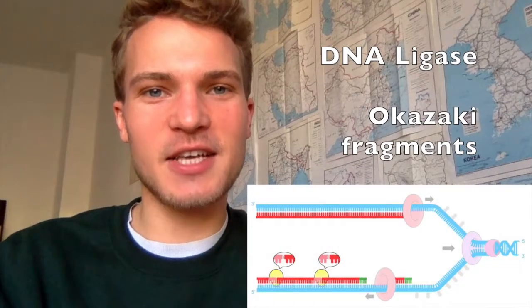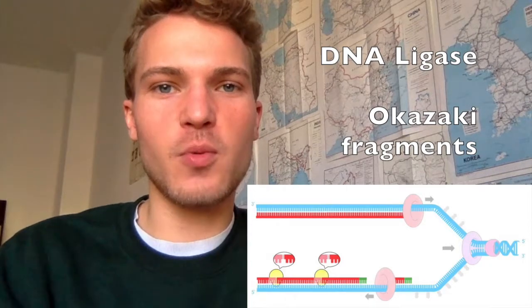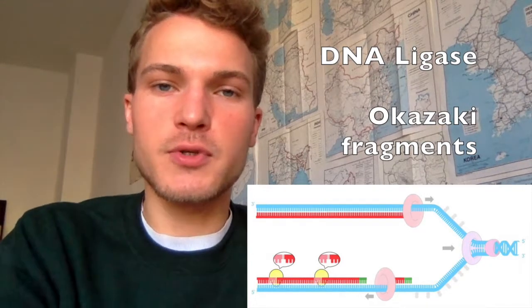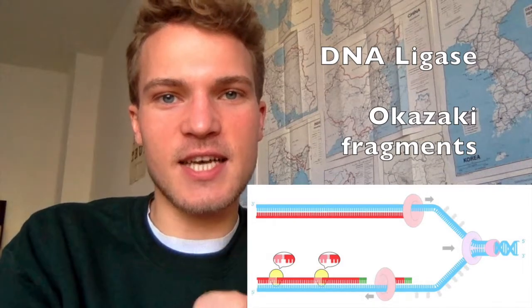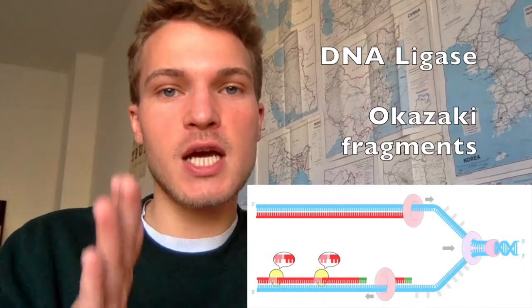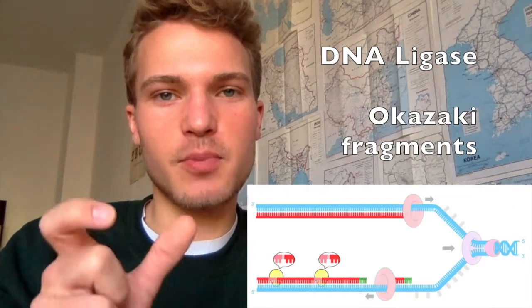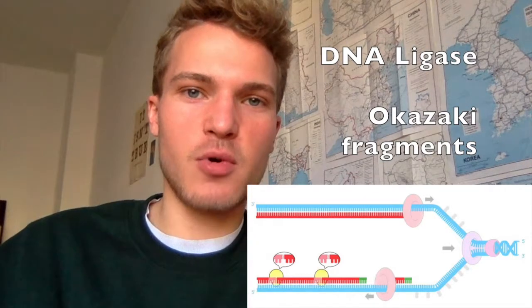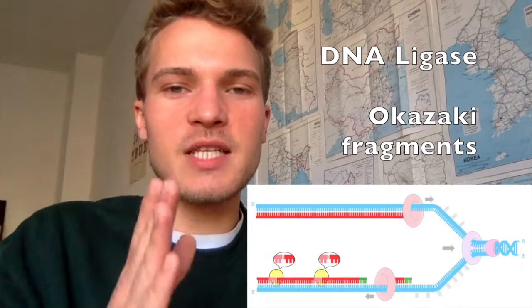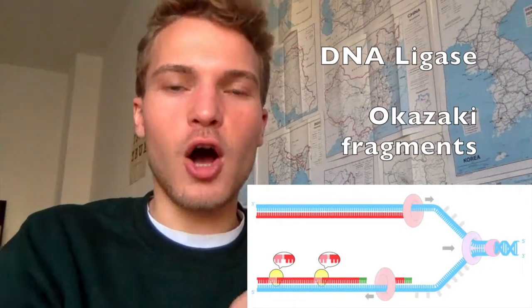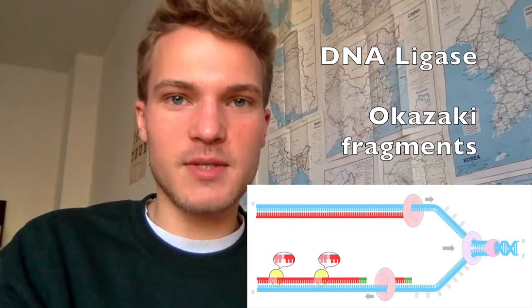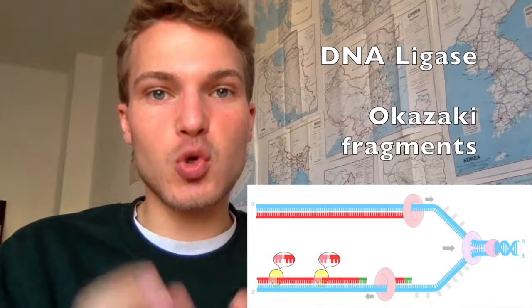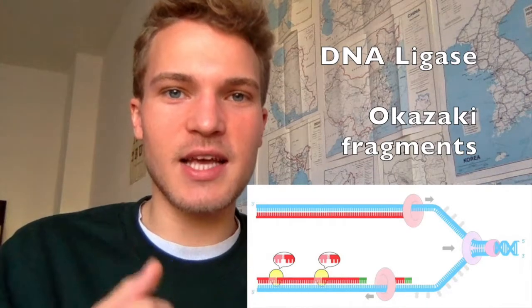One last thing must happen on the lagging strand: joining together what are called Okazaki fragments. Named after their discoverer, Okazaki fragments are the individually synthesized sections on the lagging strand. DNA polymerase III synthesizes each section starting from a primer, but these pieces are not connected to each other — even after the primers are replaced, the fragments remain separate. DNA ligase then joins them together, so that despite the complicated lagging strand process, the final result looks just like the leading strand, giving us four strands in total.